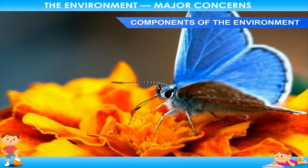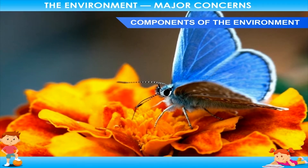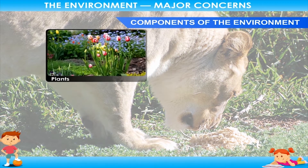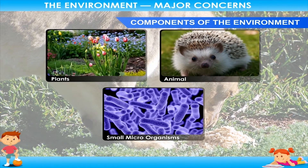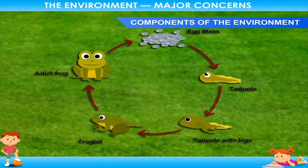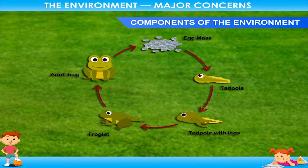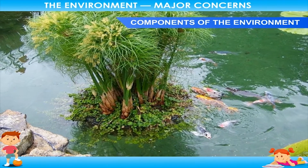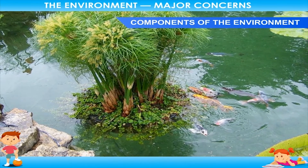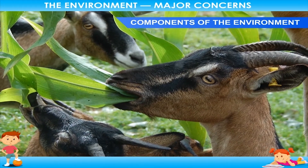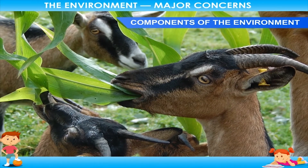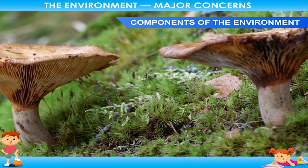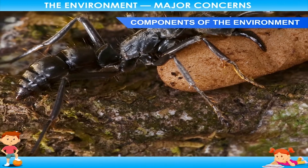Biotic components include the living beings. The biotic components of an environment are plants, animals, and small microorganisms. The biotic component affects the population of other organisms. Plants and algae are the producers or food providers of the environment. Animals consume these foods and are called consumers. Microorganisms and other organisms decompose the waste products left in the environment and are called decomposers.